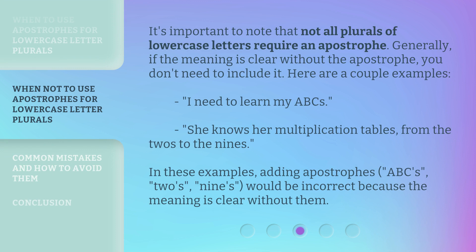It's important to note that not all plurals of lowercase letters require an apostrophe. Generally, if the meaning is clear without the apostrophe, you don't need to include it. Here are a couple of examples: 'I need to learn my ABCs.' 'She knows her multiplication tables, from the twos to the nines.' In these examples, adding apostrophes — ABC's, two's, nine's — would be incorrect because the meaning is clear without them.